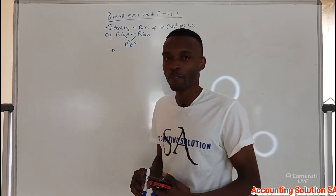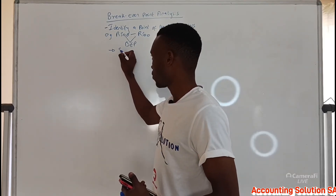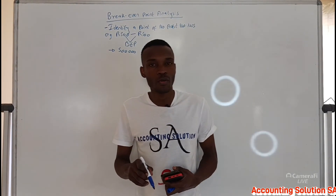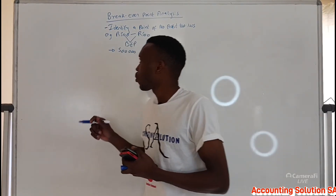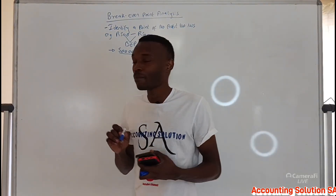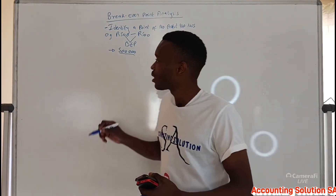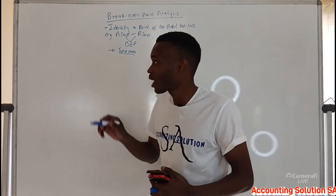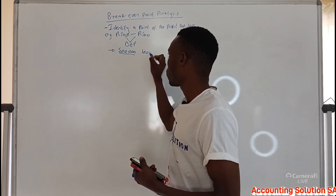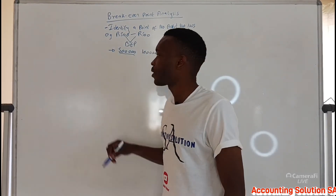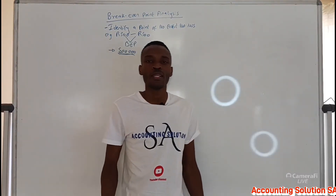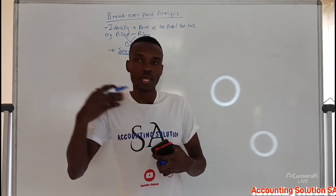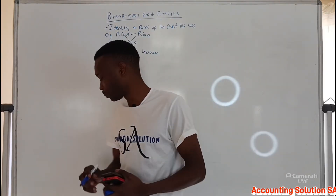Let's say the company has an objective to produce 500,000 units. The company must first identify where they are going to make a profit from those 500,000 units, because it can happen that their break-even point is at 1 million units — meaning they can't aim to produce 500,000 because they won't make any profit. The objective of the company is to make a profit, so they have to produce more than the break-even point.